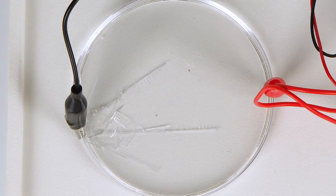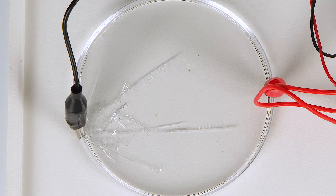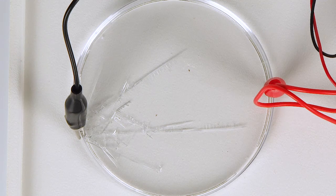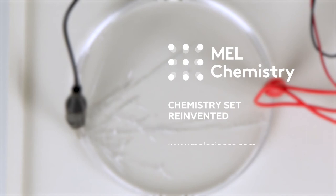The excess of electrons from the black wire go to the tin ions in the solution, reducing them to metallic tin, which grows in the petri dish in the form of beautiful dendrites. Learn more about this experiment on our MELScience website.